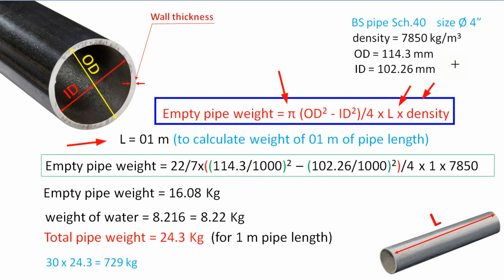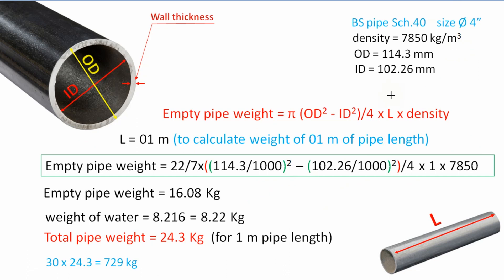For the sample calculation, we assume pipe length equal to 1 meter. We apply the values: empty pipe weight = (22/7) × (114.3/1000)² — converting outside diameter from millimeters to meters by dividing by 1000 — minus inside diameter squared, divided by 4, into pipe length of 1 meter, then multiplied by pipe density 7850. The empty pipe weight is equal to 16.08 kilograms. The weight of water inside the pipe we already calculated as 8.216 kilograms (which we can also write as 8.22 kg). Adding empty pipe weight and weight of water, the total pipe weight is equal to 24.3 kilograms.